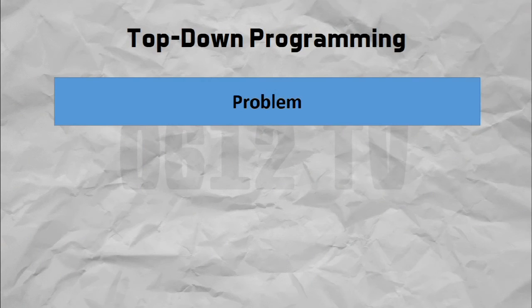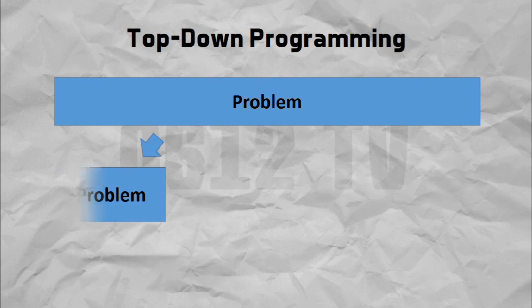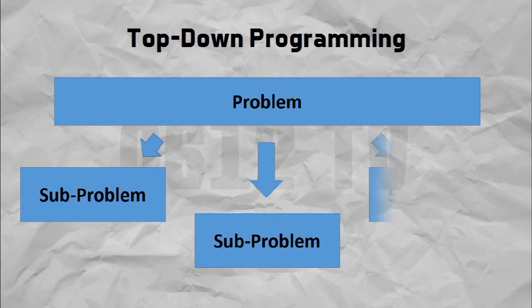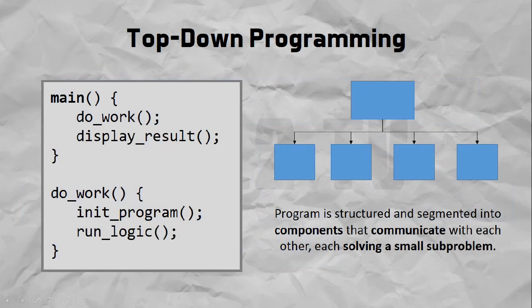Top-down programming on the other hand involves you basically sitting down and breaking up the problem into smaller parts. A top-down approach means looking at things from a very high level, planning and strategizing properly before jumping in to implement your solution.